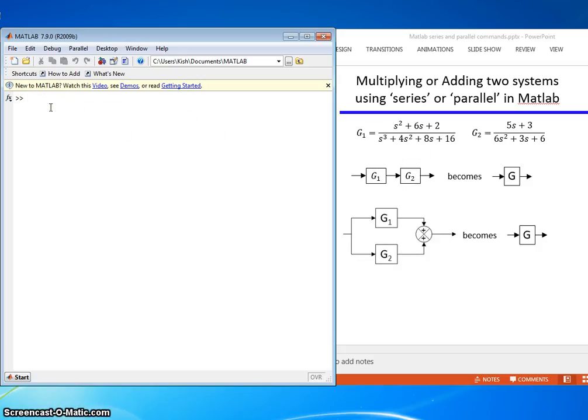So let's first put in G1 and G2. G1 equals TF 1 6 2 1 4 8 8 16. That checks.